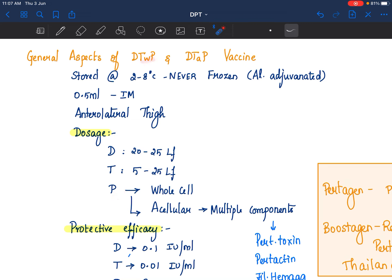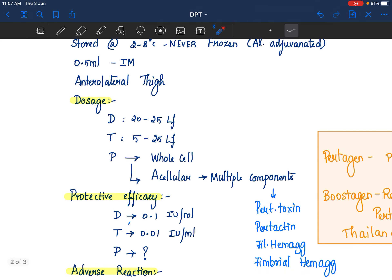P is pertussis. Pertussis we have 2. One is whole cell. The other one is acellular. Whole cell as the name suggests it is whole cell. Acellular there are multiple components of the pertussis organism.